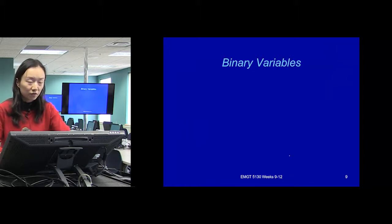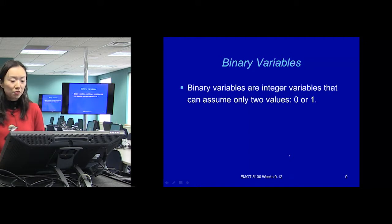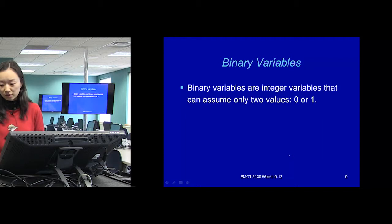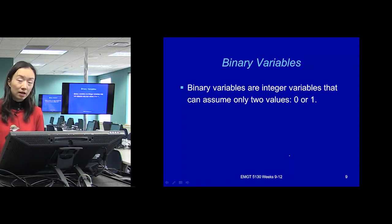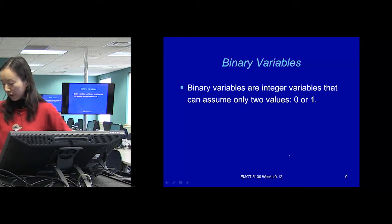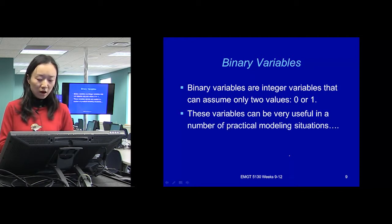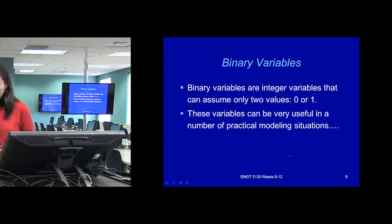Integer ILP is very useful not just because it makes more sense to add those integer constraints, but the most useful thing are those binary variables. We haven't used them yet. Binary variables are a special kind of integer variables that assume only values of 0 or 1. If you have an electrical engineering background, you know this. And those variables are very useful in a number of practical ways.